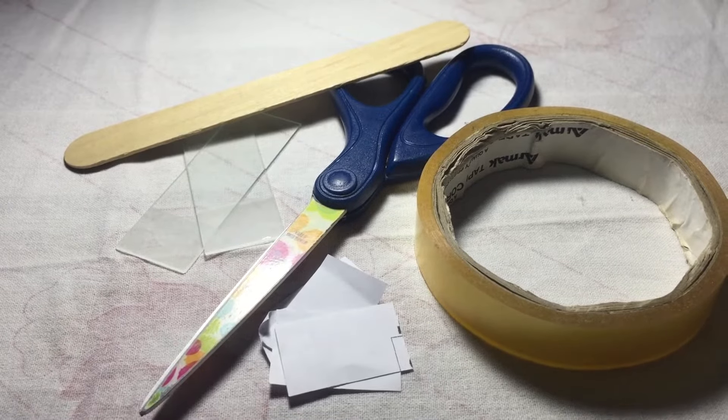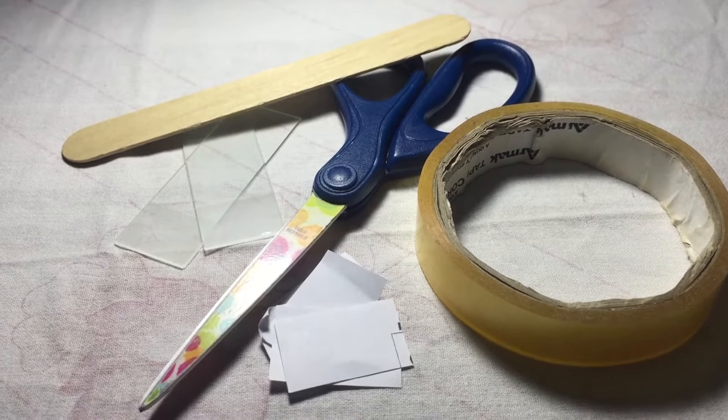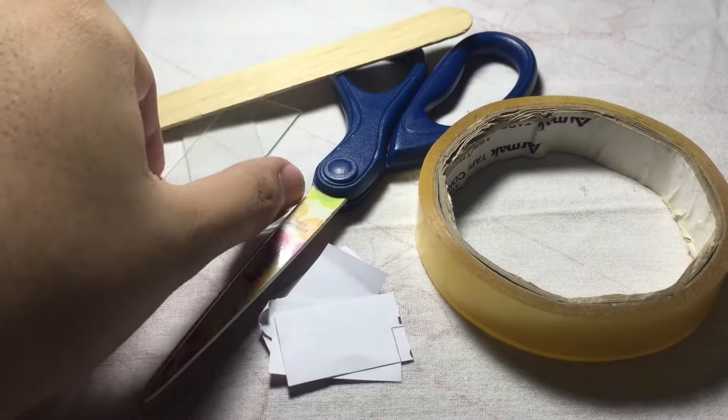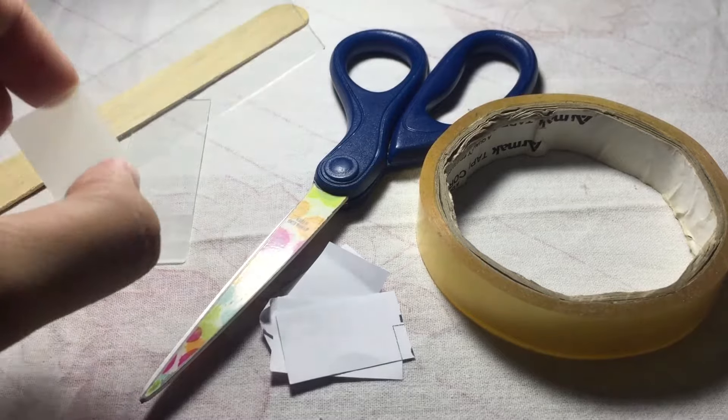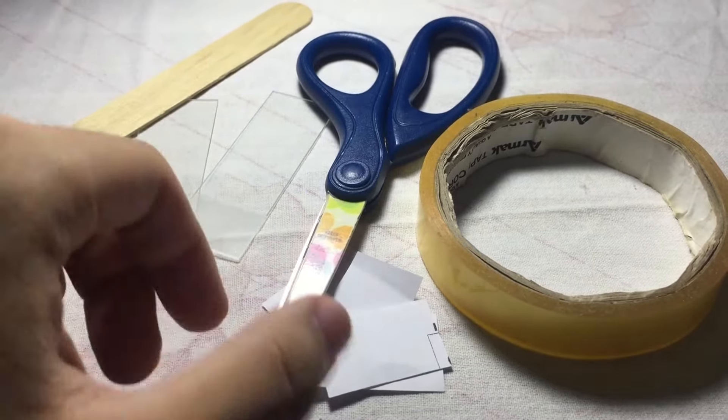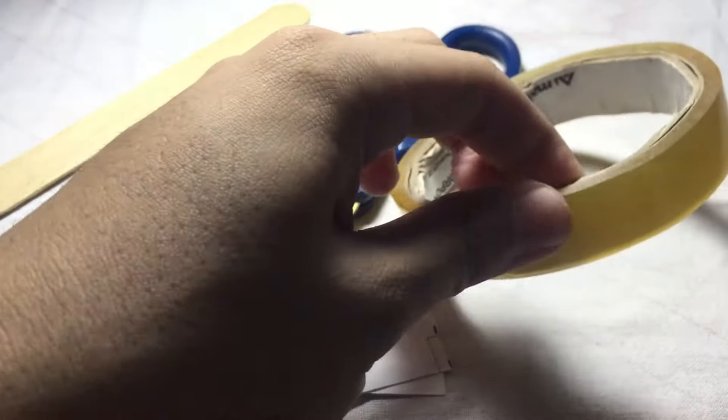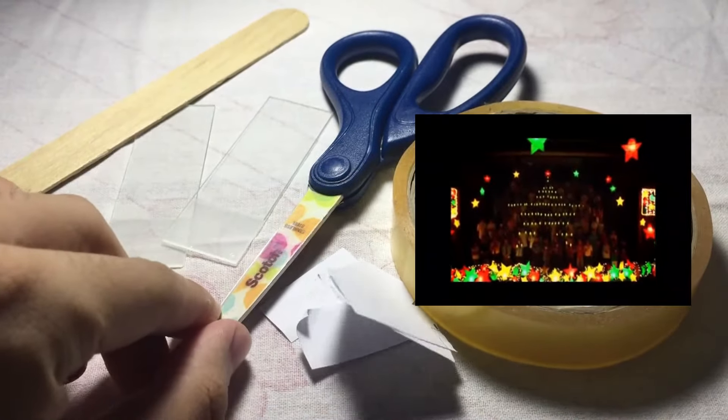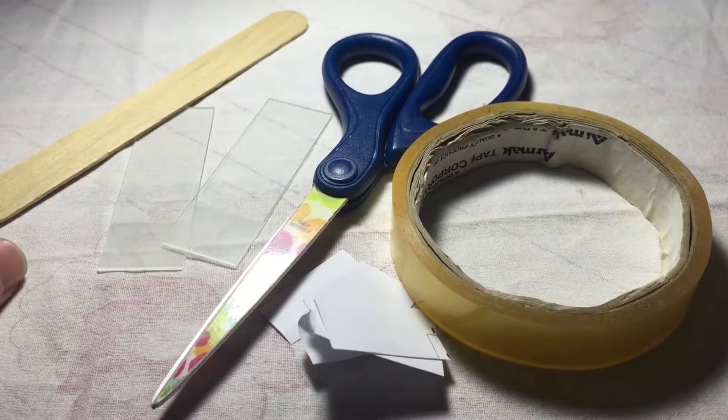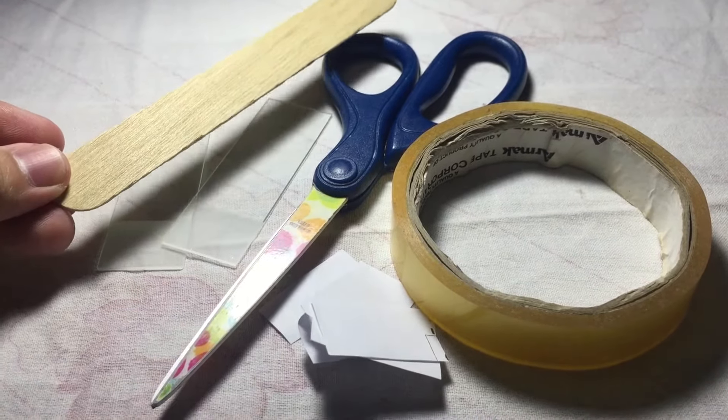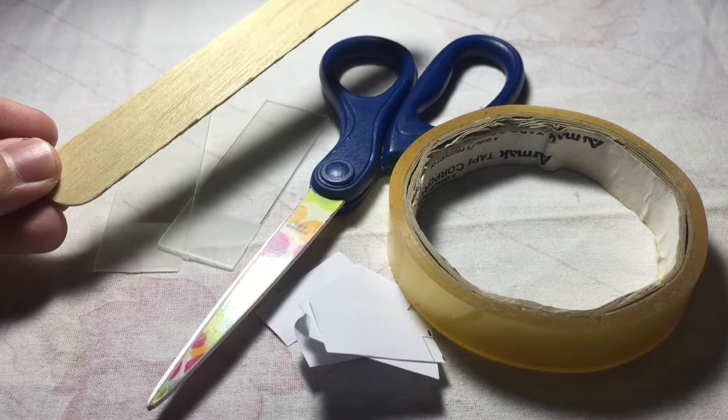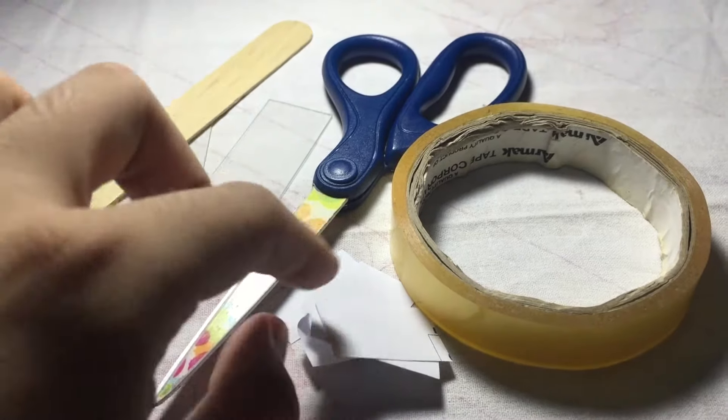First, we need two frosted slides. Next, the main star is your scotch tape. Then you have scissors to cut the scotch tape, and a tongue depressor to demonstrate how to get the sample. Lastly, your pieces of paper which will serve as your label after getting your sample.